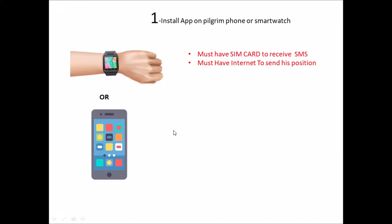First, install the application on the HG phone or smartwatch. The phone must have a SIM card to receive SMS and must have internet to send its position.